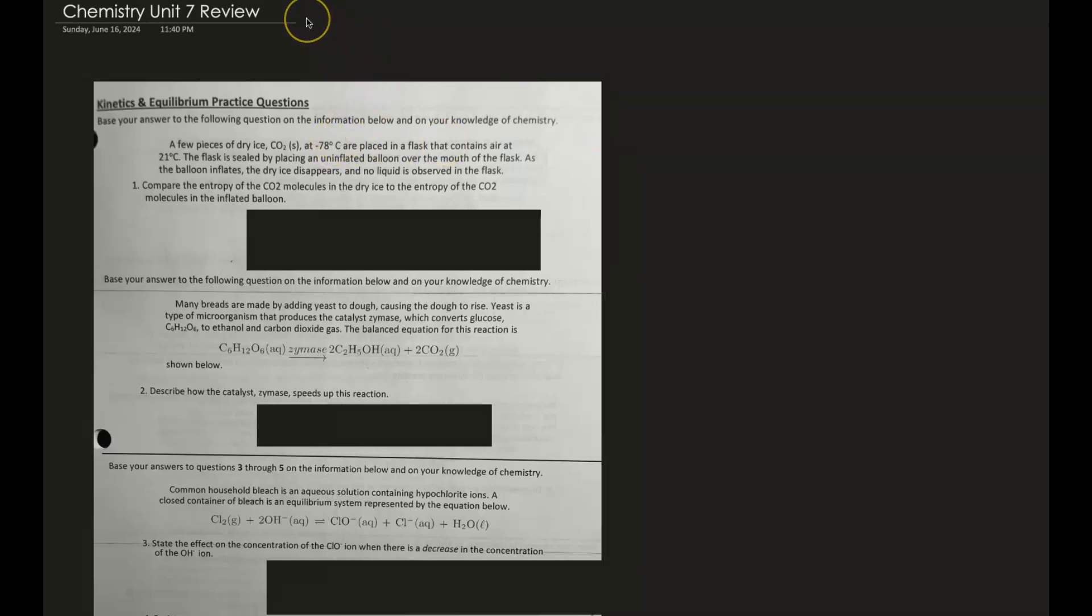Alright, so today we're reviewing Unit 7 for chemistry. This will deal with kinetics and equilibrium. The first question says a few pieces of dry ice at negative 78 degrees Celsius are placed in a flask that contains air at 21 degrees Celsius. The flask is sealed.